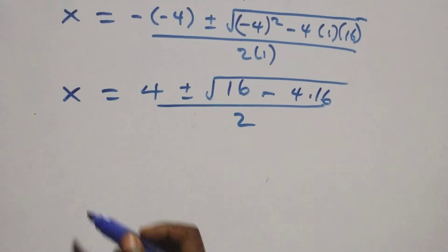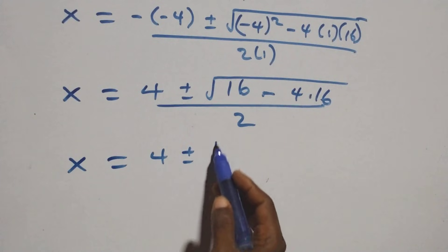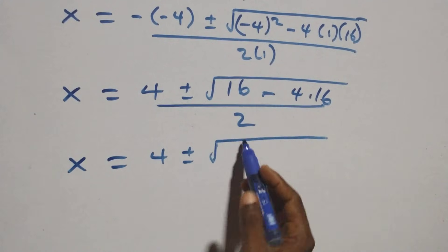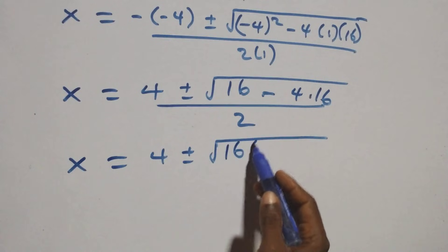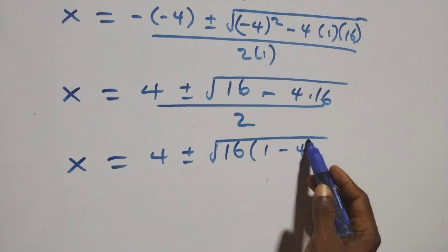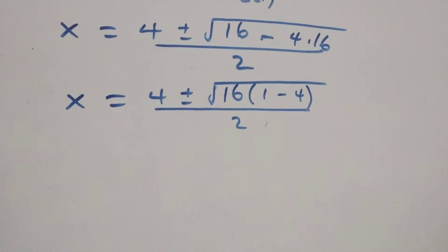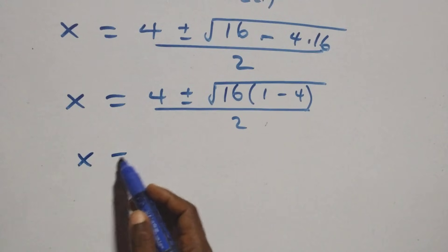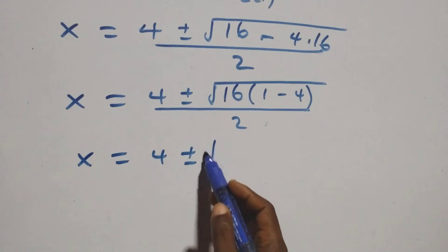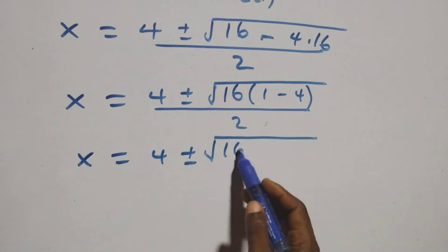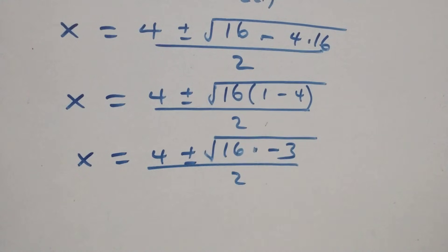From here, we have x equals to 4 plus or minus square root of 16, factoring out 16 as a common factor, giving 16 times (1 minus 4), that is minus 3, all over 2.